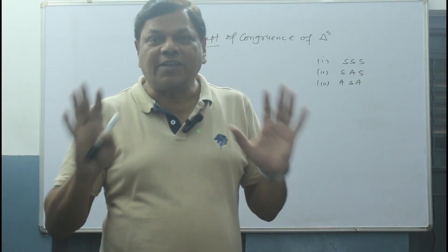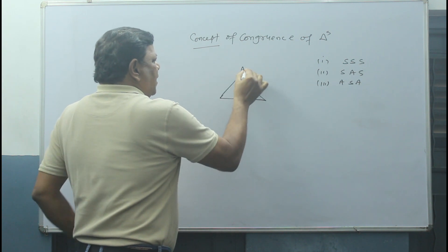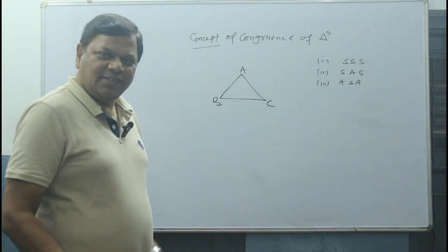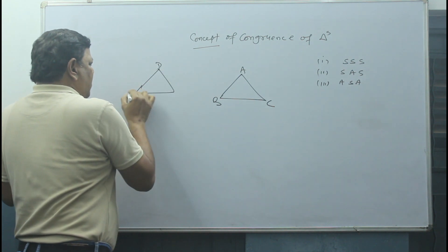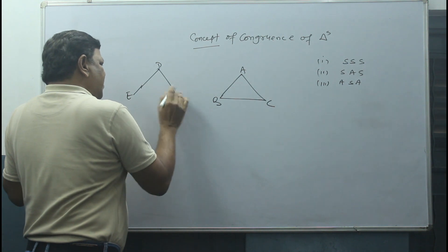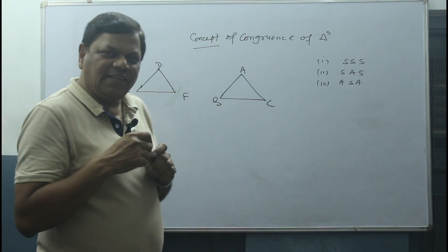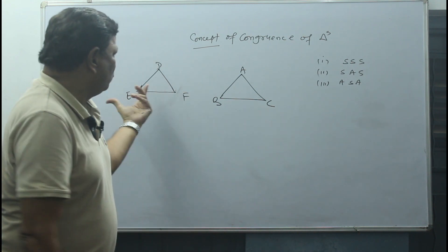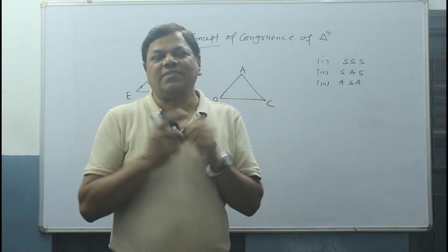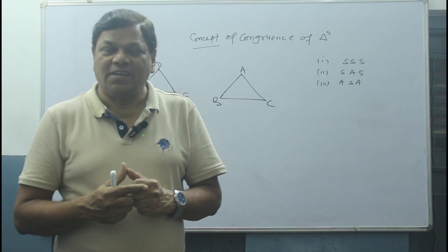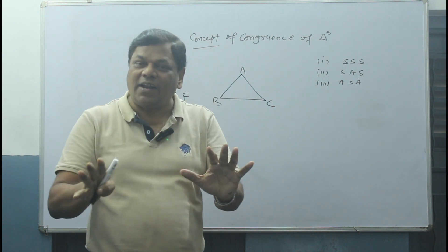What is congruency? Congruency means two triangles. You know triangle sides. One triangle has vertices A, B, C and this is another triangle with vertices D, E, F. Two triangles are said to be congruent — that means equal in all respects.